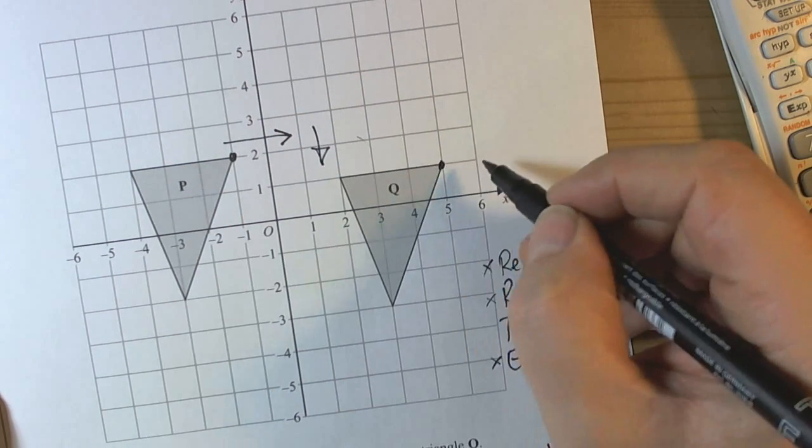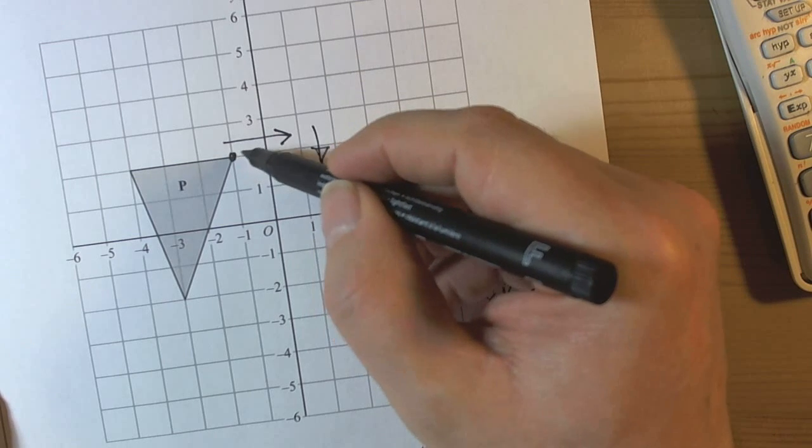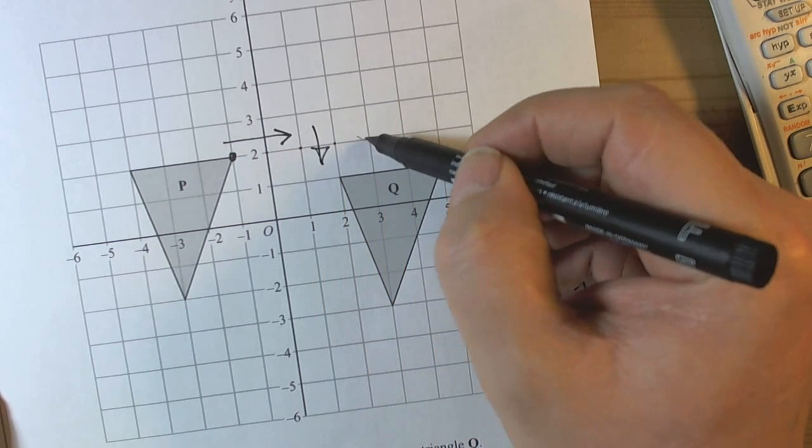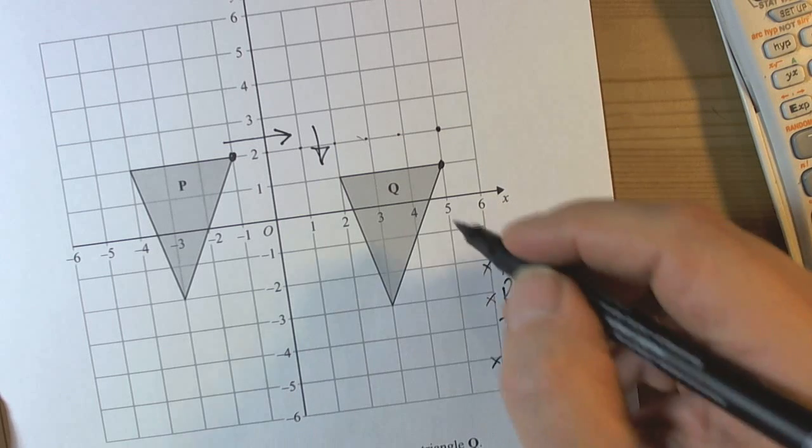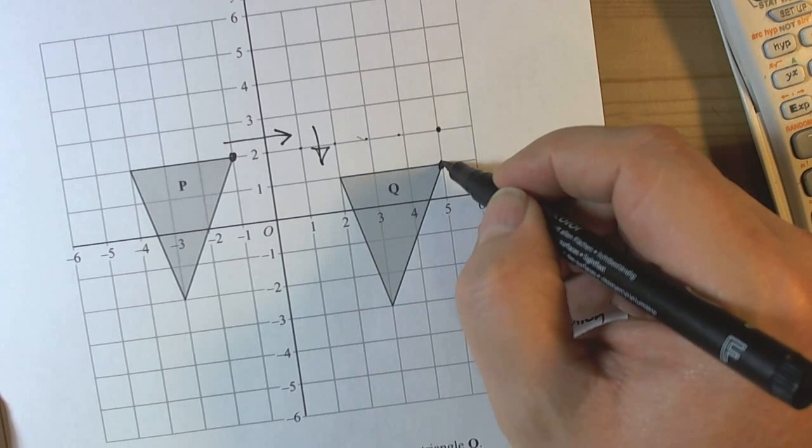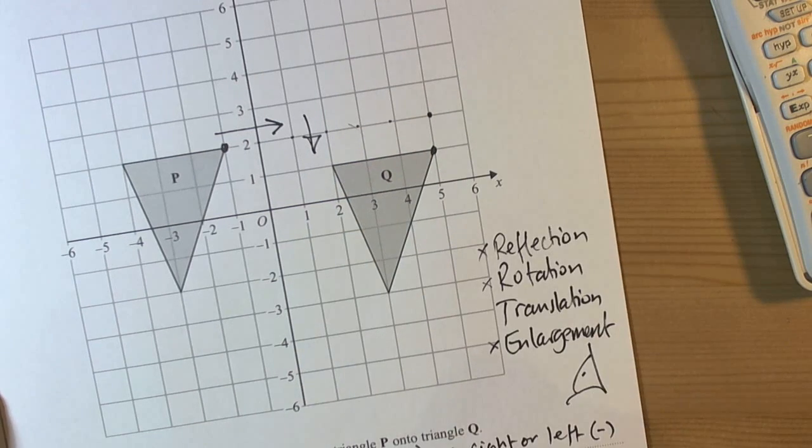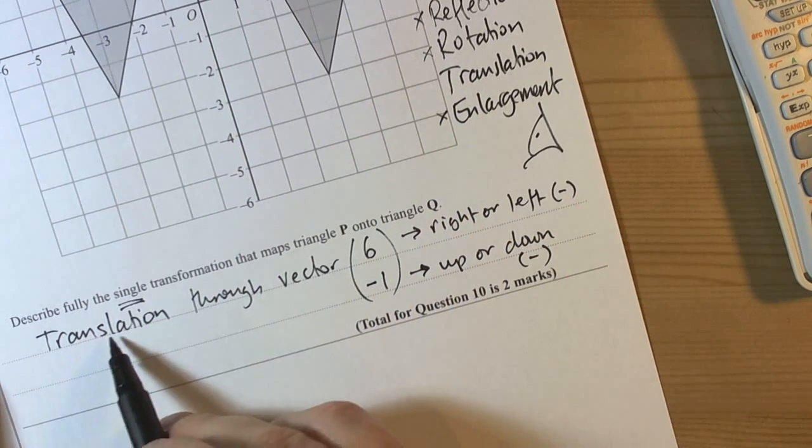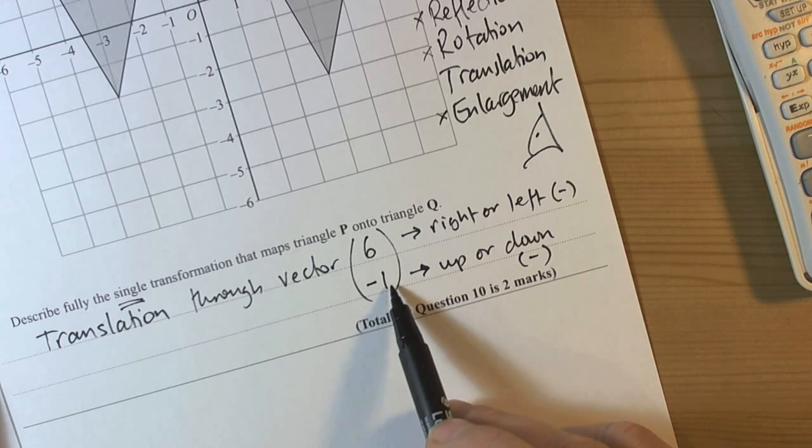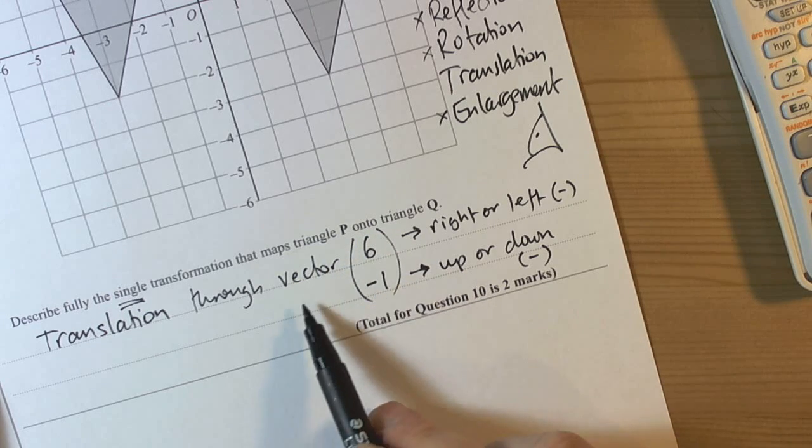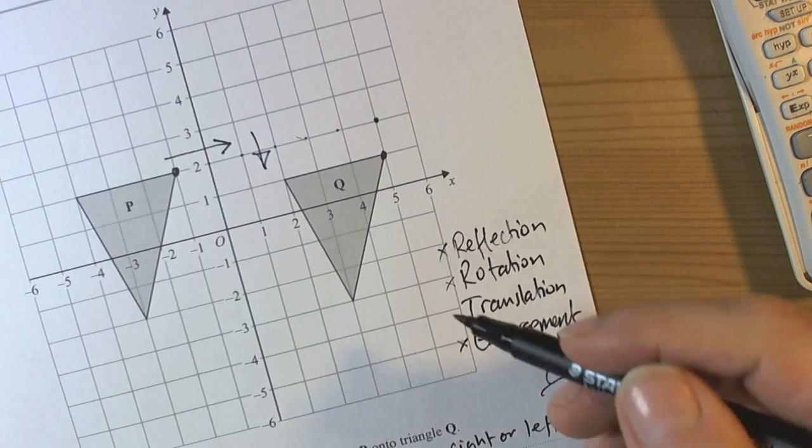So that point is going to go to there. So we can go along 1, 2, 3, 4, 5, 6. So we've gone 6 to the right, so that's positive. And then we've gone 1 down, so that's going to be negative, so a negative 1. So the translation will take P to Q through the vector of 6, negative 1. So 6, negative 1 is the vector needed.